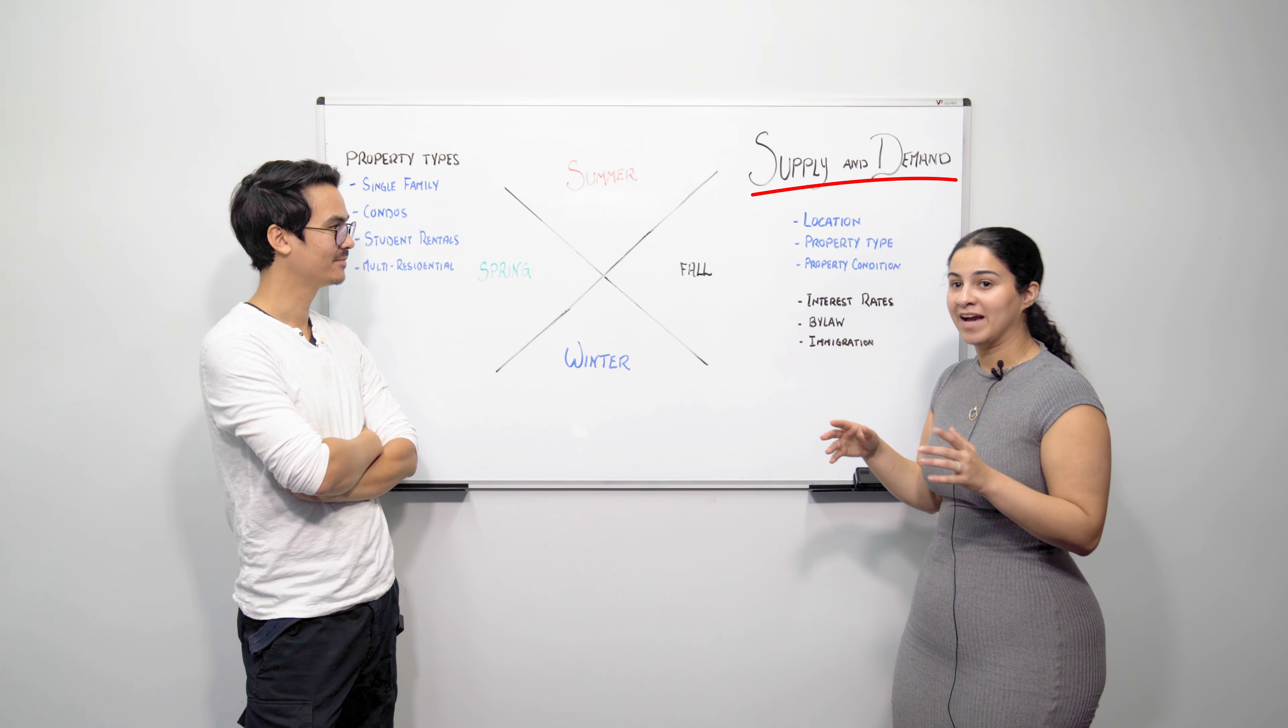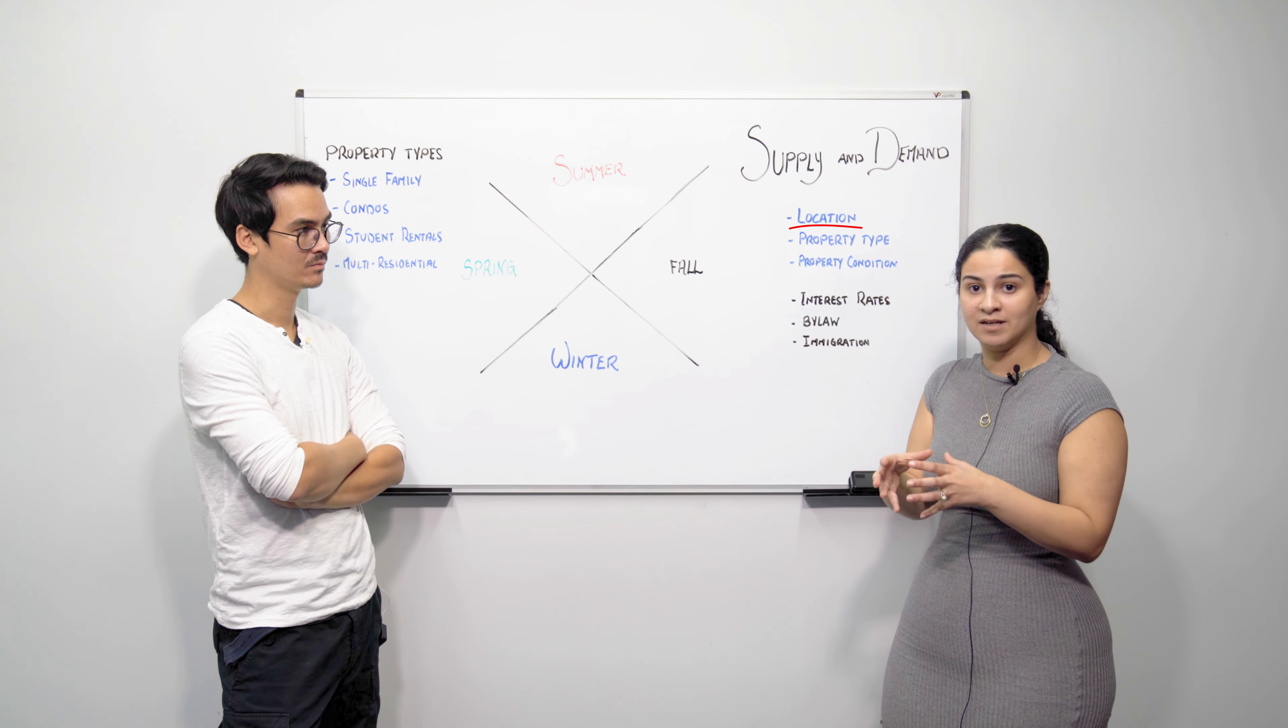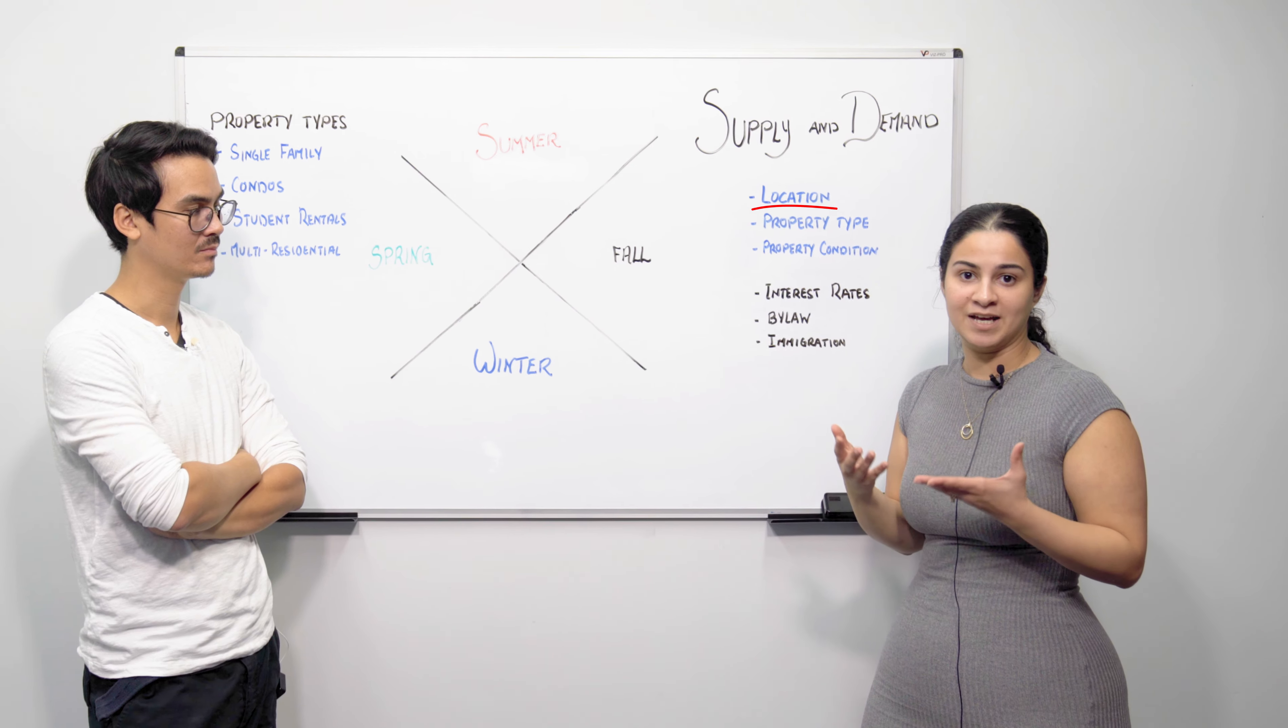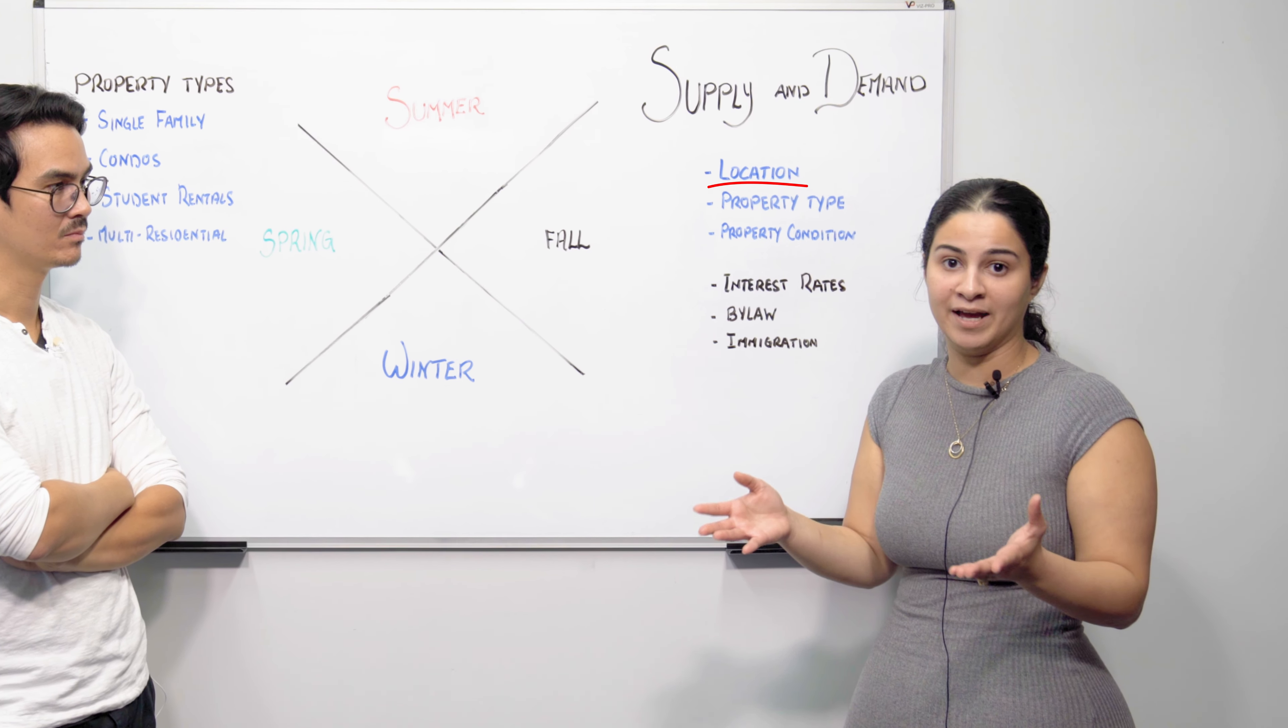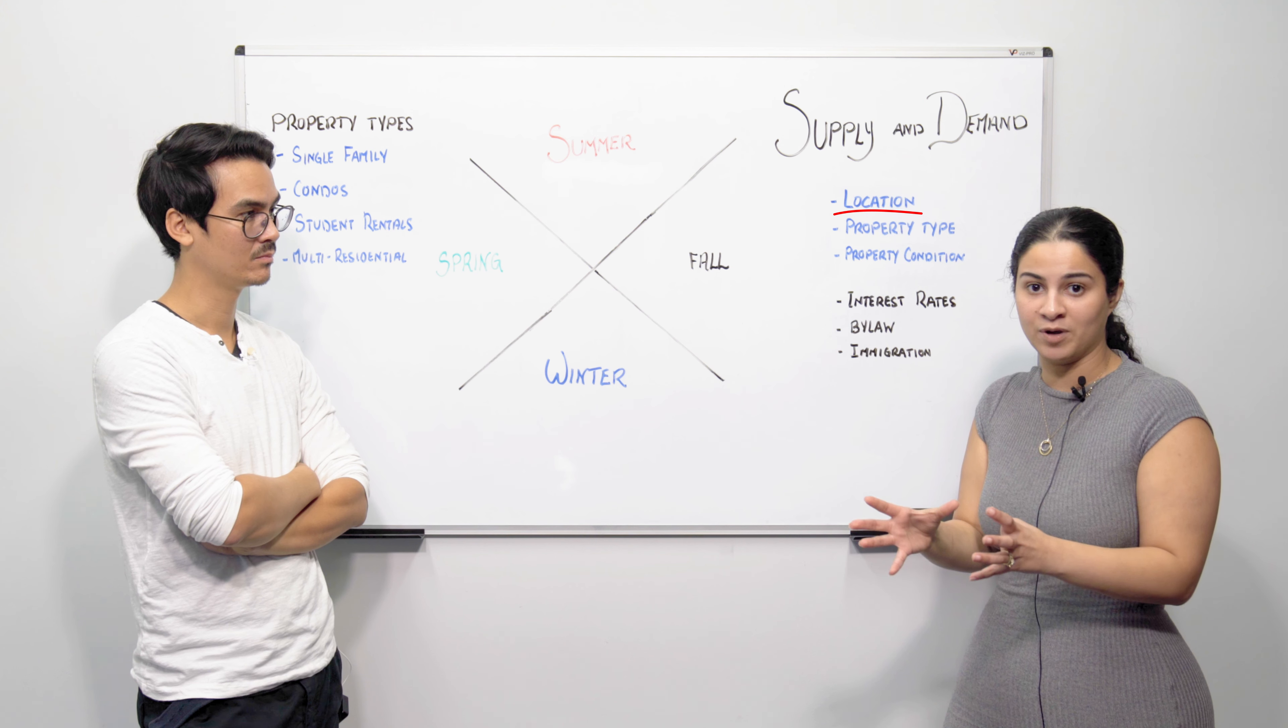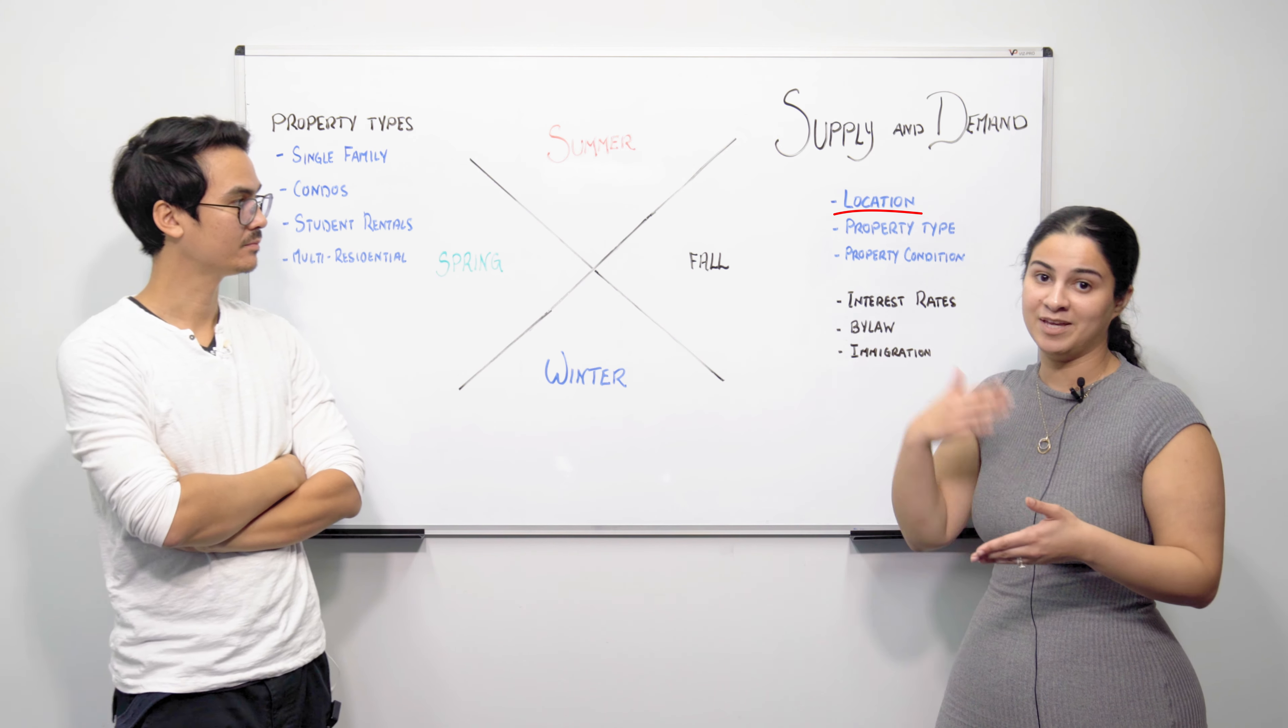One of the factors impacting supply and demand is location. If you're one of the houses for sale in a highly desirable area that does give you a lot of leverage as a seller because there's not a lot of comparables to look at and there's not a lot of supply. And essentially if the demand is high, like we said you're in a desirable location, then you're definitely going to get the price that you're looking for and maybe even exceed that.